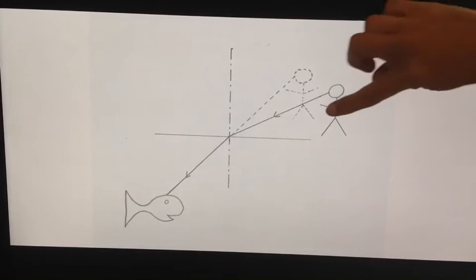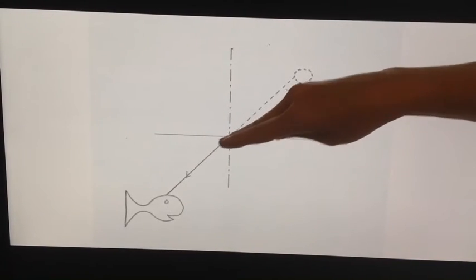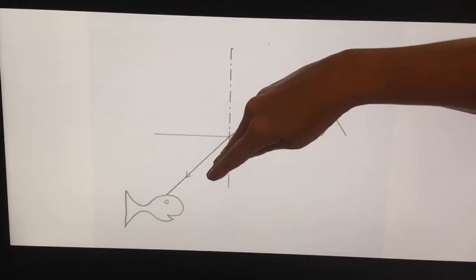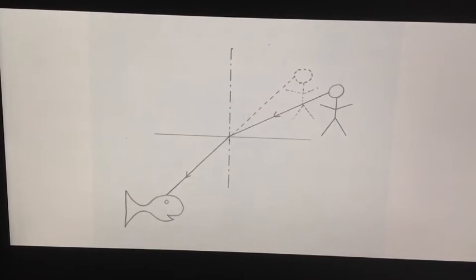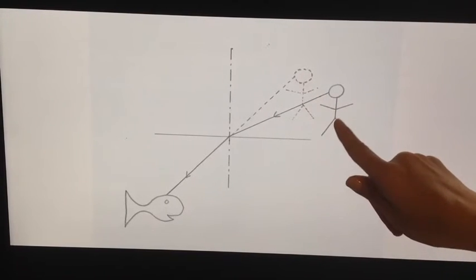As the light hits the boundary, the left hand side of the light is hitting first. And so the skid is caused towards that normal line. So the fish thinks you are higher than you really are. Because really you're there.